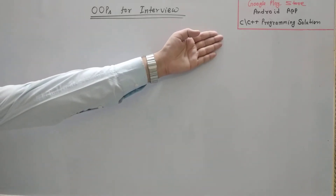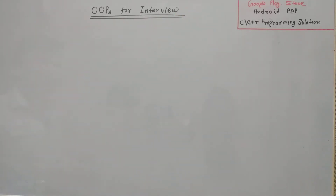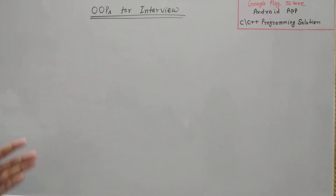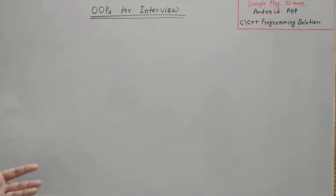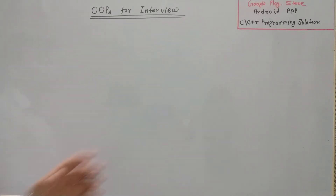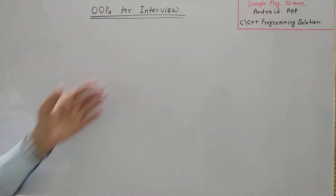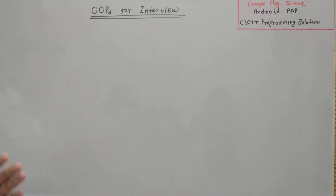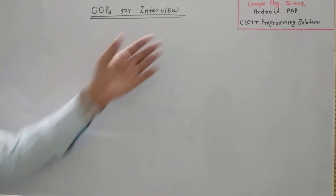For more detail, you can download the C++ Programming Solution Android app, which contains all the placement-related stuff — like how to prepare for written exam, aptitude exam, technical interview, HR or managerial interview. You will get all the details in C++ Programming Solution, so you can download it and also provide a rating for it.